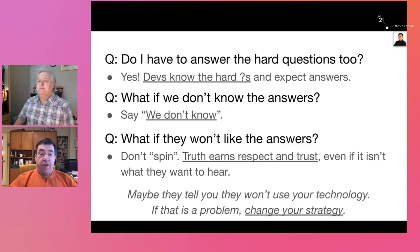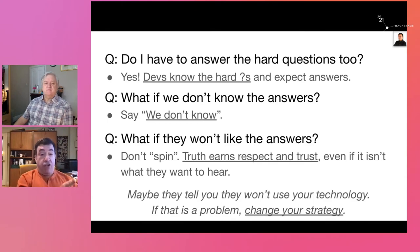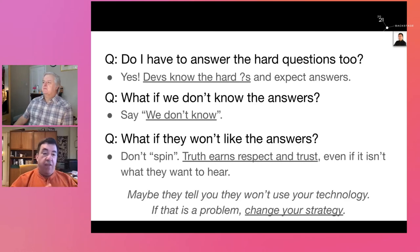One thing that can happen is you go through the process and discover that developers just aren't going to adopt your technology if you follow the strategy you have in mind. So then you have a choice: change the strategy, or don't change it and don't use an adoption-led, developer-led model for success. You've got choices, but at least you won't be surprised — and the community won't be surprised.